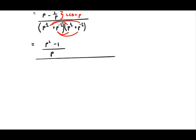Every single term here has the same base. When we have the same base with exponents, we add the exponents — that's the law: x to the a times x to the b equals x to the a plus b. Looking at the first terms: p to the half times p to the half gives us p to the power of one, since a half plus a half equals one.